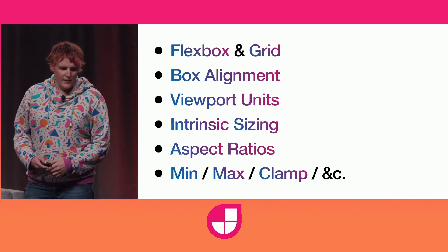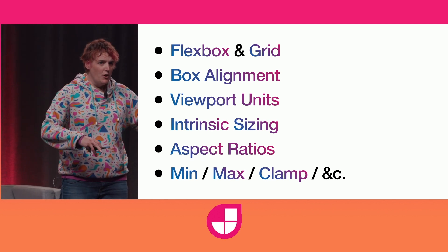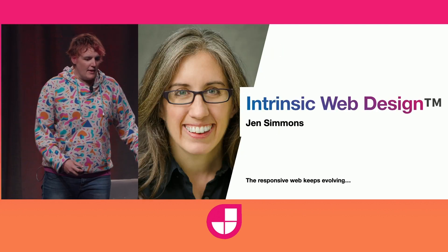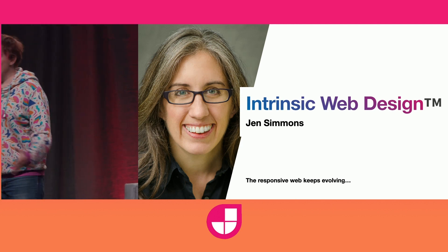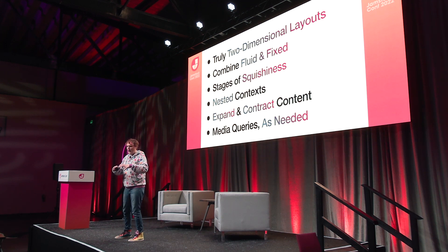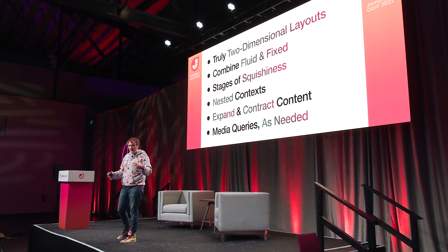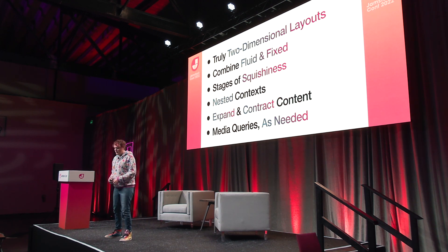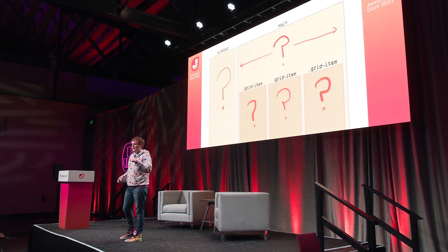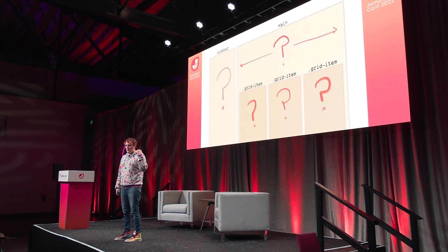Jumping forward to now, we've got flexbox and grid, box alignment, viewport units, actual explicit intrinsic sizing, aspect ratios, min, max, clamp. It is now the era of intrinsic web design, as coined by Jen Simmons. We're putting all this intrinsic information back into our designs, and that's super powerful. We've got truly two-dimensional layouts combining fixed and fluid elements on the same page, coordinating how they squish in different stages. We've got nested context, content that expands and contracts. If we've got nested context with content that expands and contracts, that sounds like we've got containers we wish we could query.